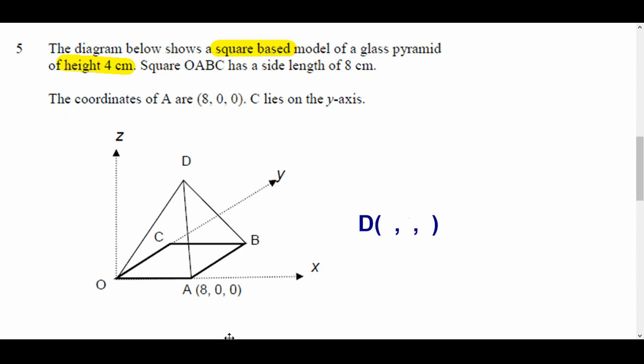Now, on a square-based pyramid, D will be right in the middle. So basically, to do that, you need to go along here halfway, along there halfway, and then finally, straight up to get to D. So straight up and down like that. And I'm just joining that wee bit up there. So something like that. So halfway along this way for your x-coordinate, that's, well, if it's 8 then halfway is 4.